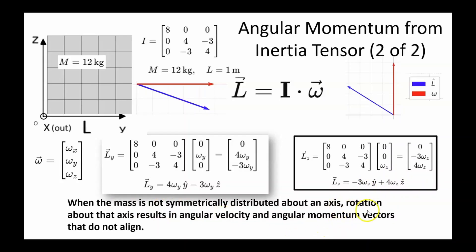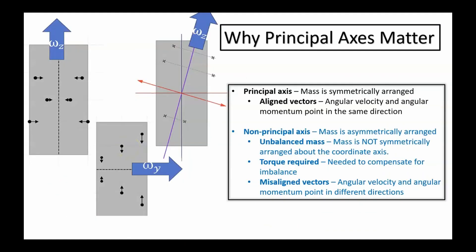Why do principal axes matter? A principal axis is one where mass is symmetrically distributed, so when an object spins around it, angular velocity and angular momentum align. If the mass isn't symmetric about the rotation axis, those vectors point in different directions and a torque is required to keep the object spinning — this happens because asymmetric mass distribution disrupts balance.